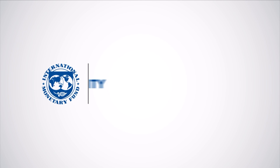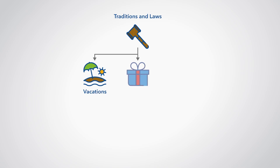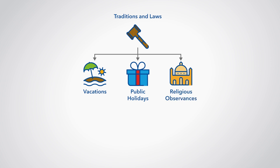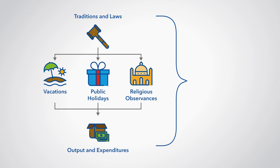Time series facilitate the analysis of developments over time in a flexible manner. Economic time series are often characterized by recurrent seasonal effects. The weather directly affects certain types of production, such as agriculture and construction. Societies also have traditions or laws that establish seasonal patterns for vacations, public holidays, and religious observances, which affect output and expenditures. These factors lead to regular seasonal patterns in economic time series, including GDP.